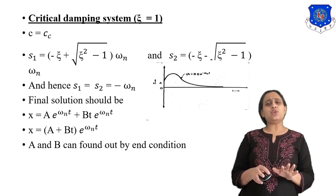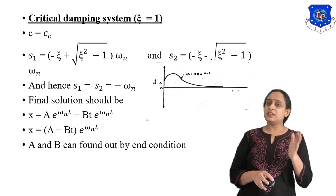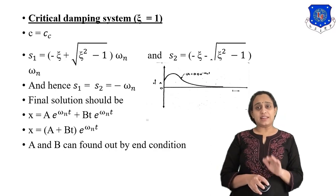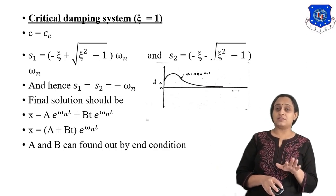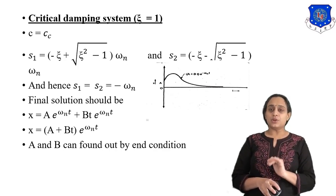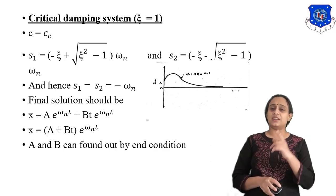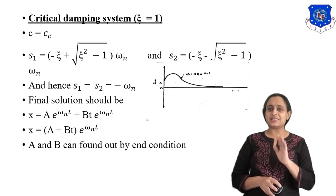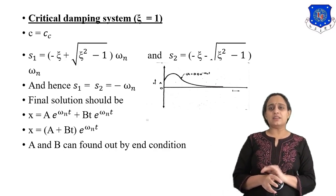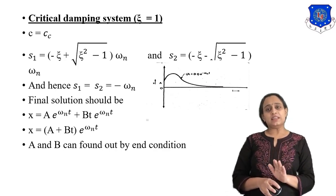By solving this and applying the end conditions similarly to system one, we get both arbitrary constants A and B as positive and real. The graph of the critically damped system has a characteristic shape — it returns to equilibrium without oscillating. Many gun barrels use this kind of critically damped system.